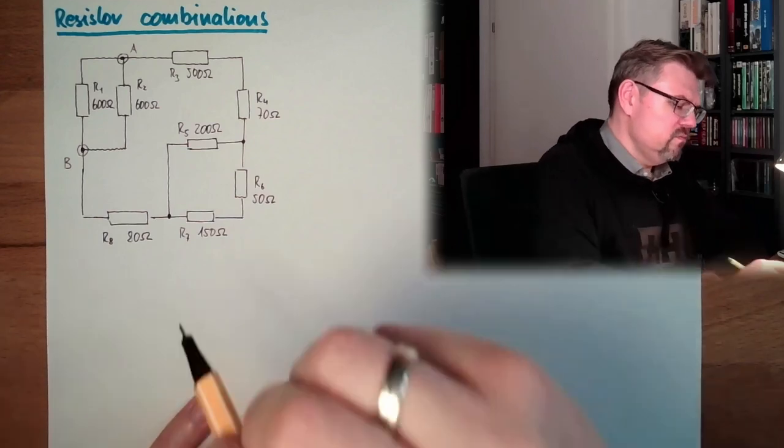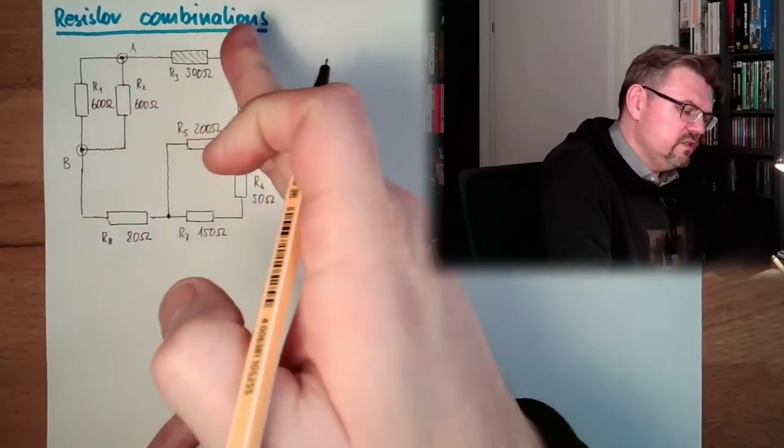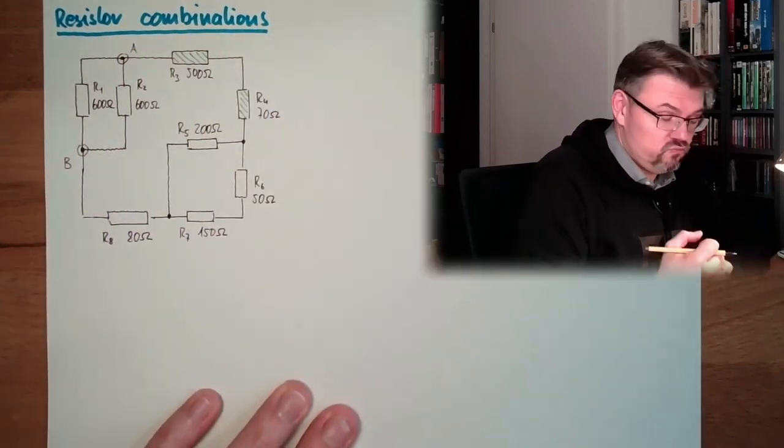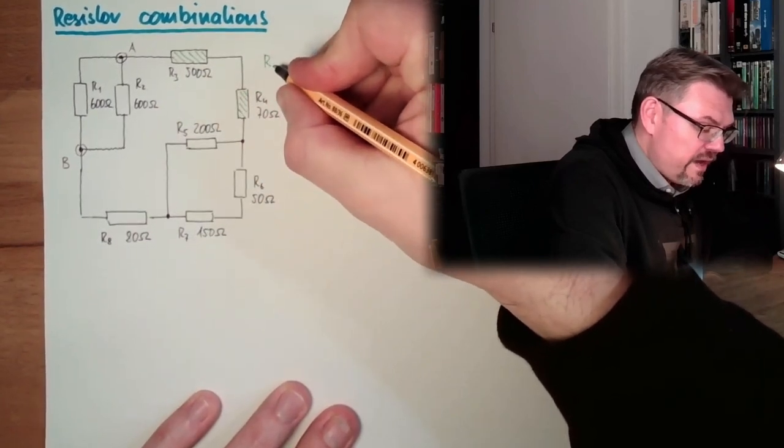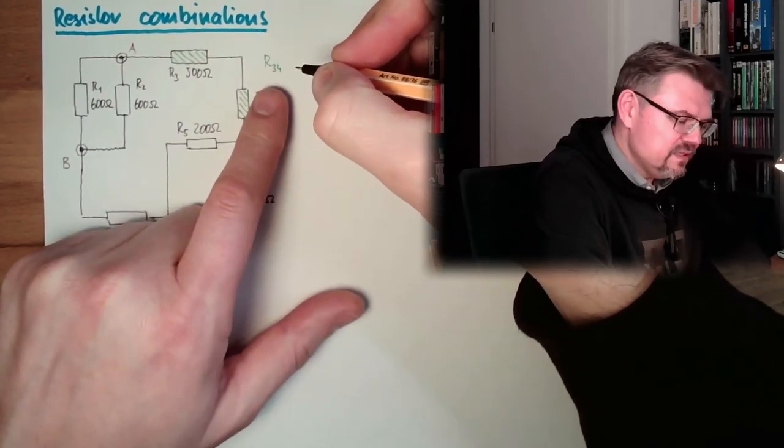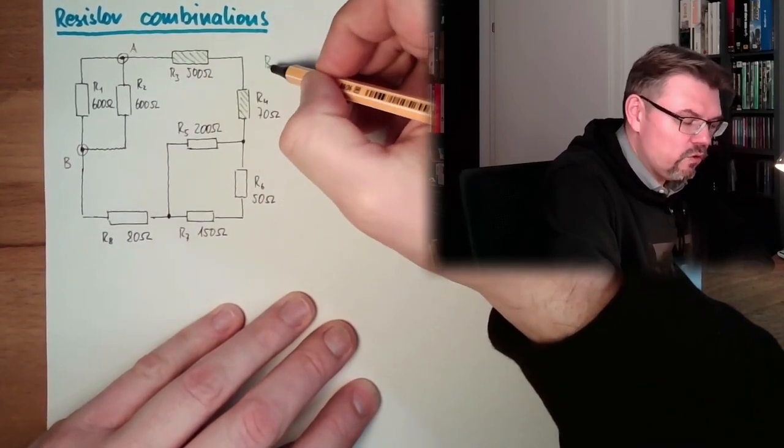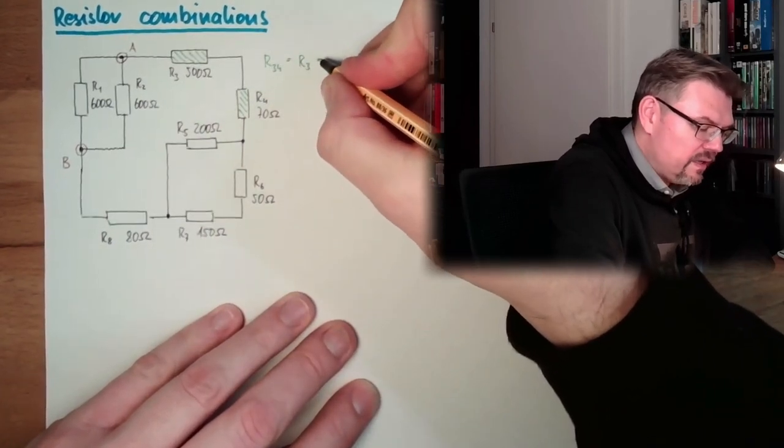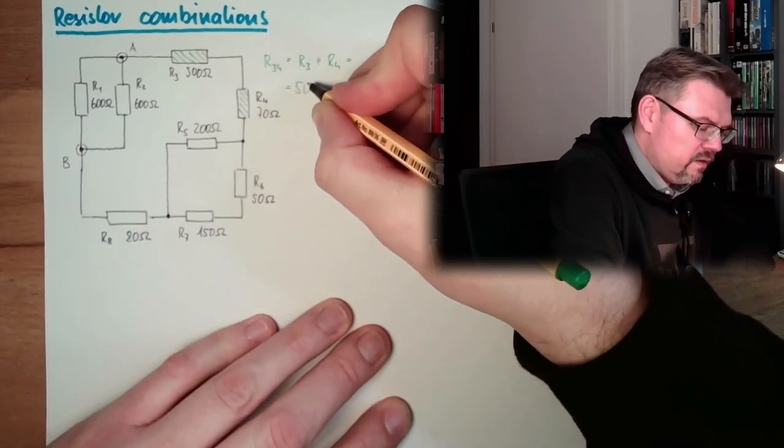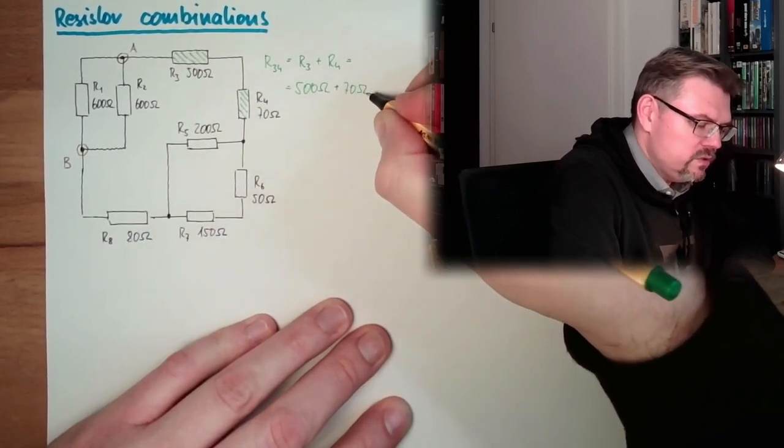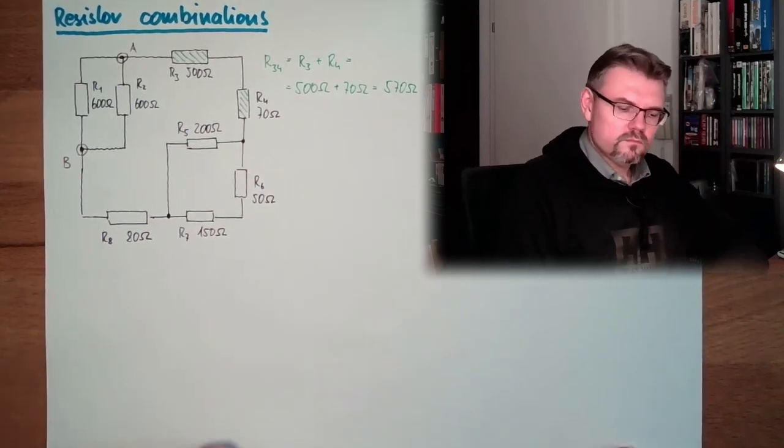And here, those two, this one and this one, they are a series connection, one after the other. So we say, okay, we pull them together, we say R34. It's good to name the resistance in a proper way so that we can find. So the combination of R3 and R4 is called R34, and this is R3 plus R4 because it's a series. So actually that's 500 ohms plus 70 ohms equals 570 ohms.